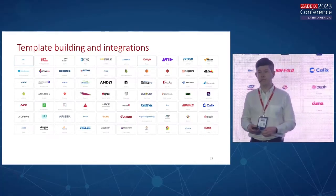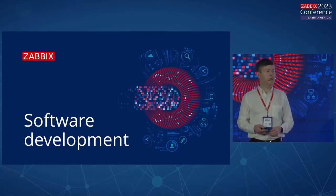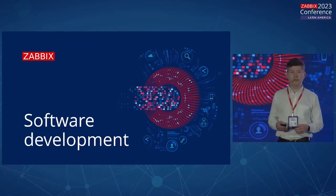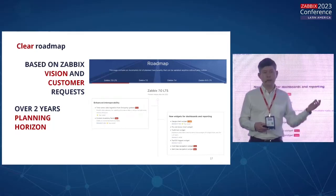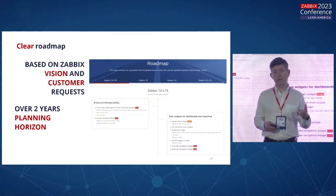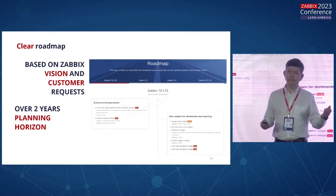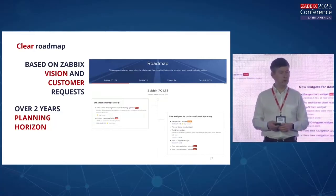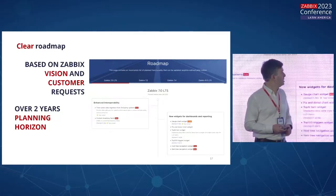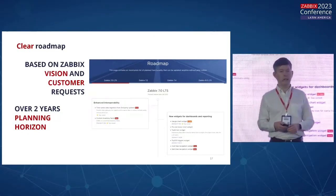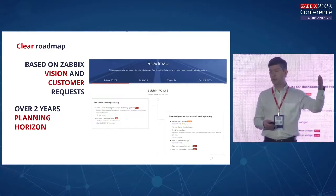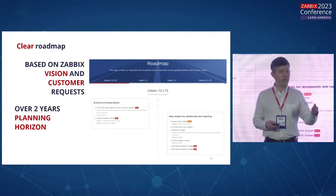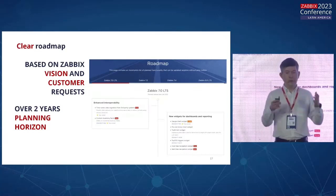Software development — a little more detailed information on how we build Zabbix software. The roadmap is publicly available and constantly updated. I personally update it maybe every two months or as soon as we have major changes. The roadmap is based on the vision, customer requests, and community feedback. You can vote for Zabbix features in our feature request tracker, and we look at this when we build the roadmap.